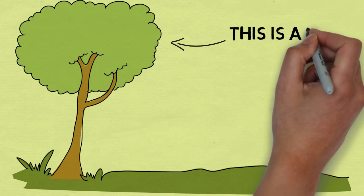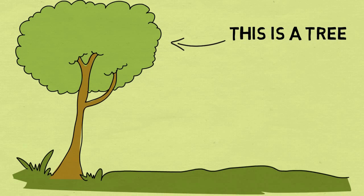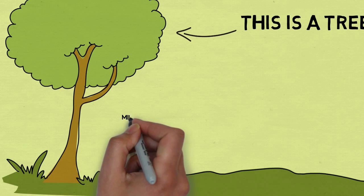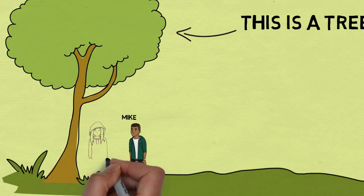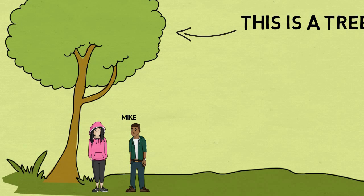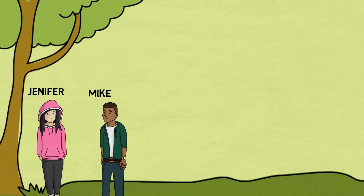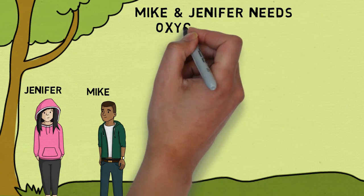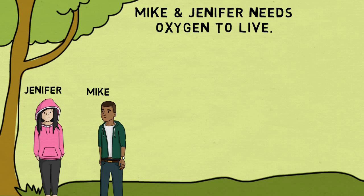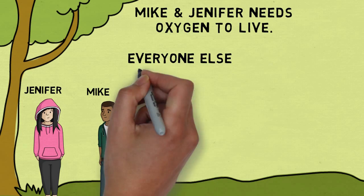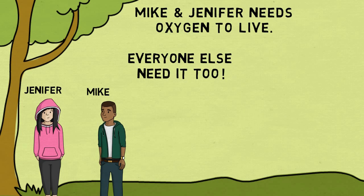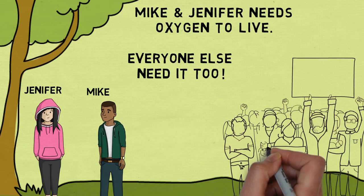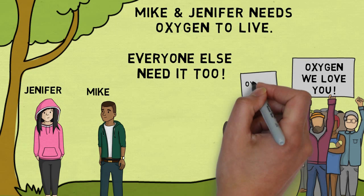This is a tree. This is my friend Mike, and this is Jennifer. Mike and Jennifer need oxygen to live — everyone else needs it too. They don't just need it, they love it.